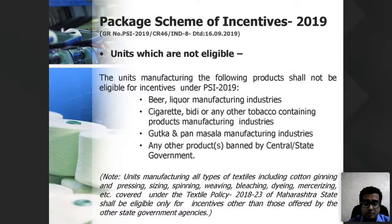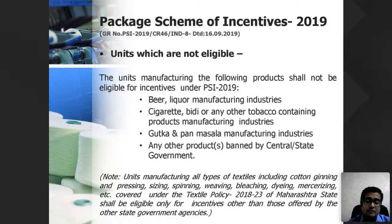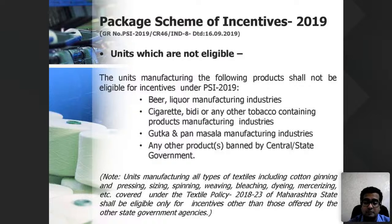Units manufacturing banned products like beer, cigarettes, gutka, and products banned by central and state government will not be covered. Regarding receiving subsidy from both state TUFS and DIC — since both are state departments, whatever subsidy you received from state TUFS will be subtracted from the DIC PSI amount. However, you can get the full amount from the central scheme in addition.